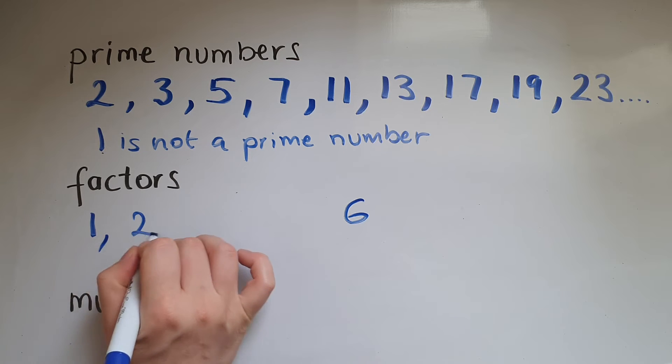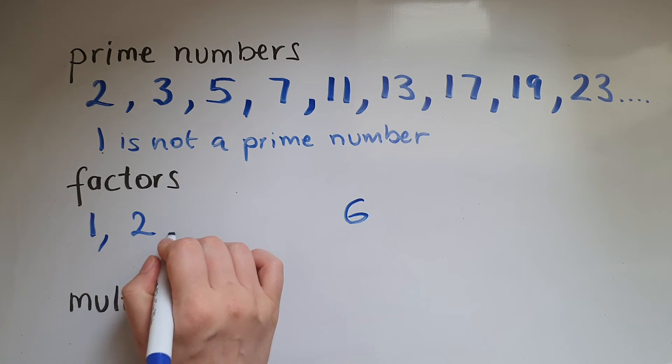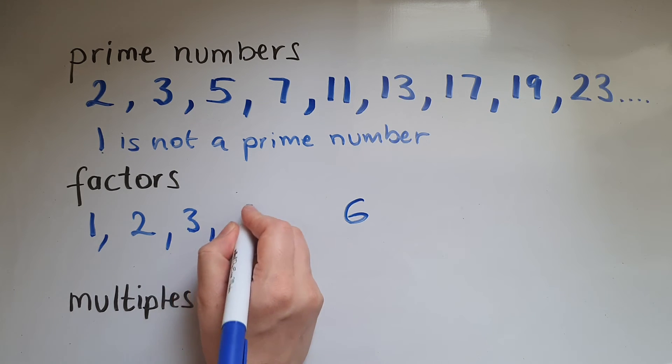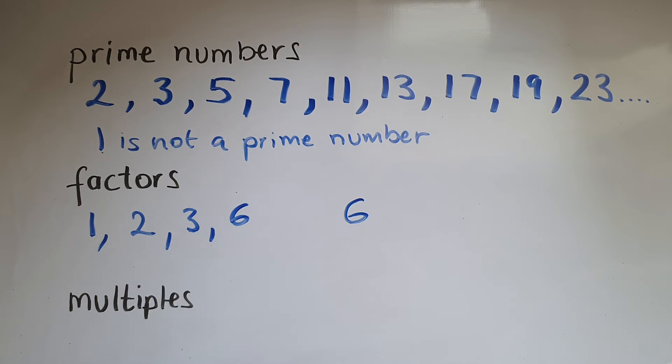It can be divided by two because two times three makes six, and divided by six as well. So these are factors of six. And again, we're talking about division without remainders. So when you divide six by one, two, three, or six, you get a whole number as the answer.